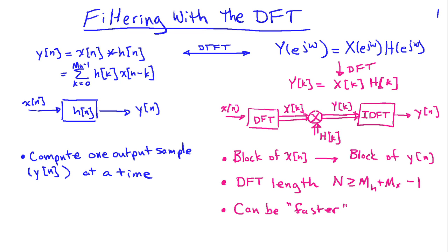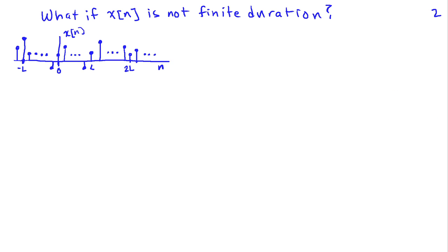We can only apply this to cases where we have a finite length x[n]. So we have to ask the question: what if x[n] is not finite duration? I've sketched something here where x[n] goes in both directions forever. Can we still make this DFT approach work for this kind of signal? The answer is yes. We're going to break x[n] up into blocks that are finite duration and then process those blocks individually.